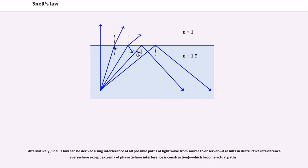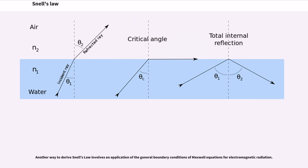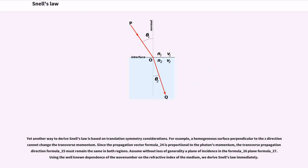Alternatively, Snell's law can be derived using interference of all possible paths of light wave from source to observer. It results in destructive interference everywhere except extrema of phase which become actual paths. Another way to derive Snell's law involves an application of the general boundary conditions of Maxwell equations for electromagnetic radiation. Yet another way to derive Snell's law is based on translation symmetry considerations.